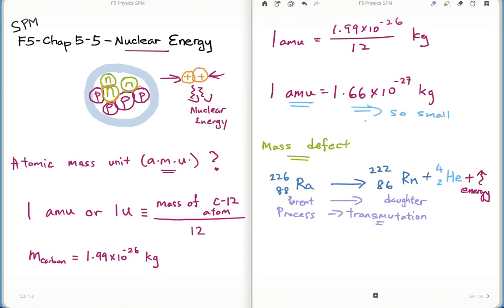When this transmutation occurs, you see that the mass is actually not equal. You can't see it here because it tells you only 88 protons. Let's calculate the total amount of protons on the left and compare it with total mass of protons on the right. You'll find that there would be a difference.